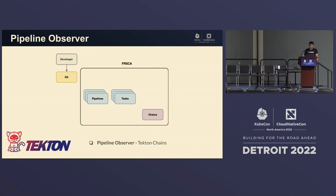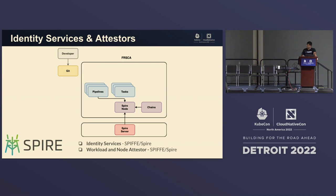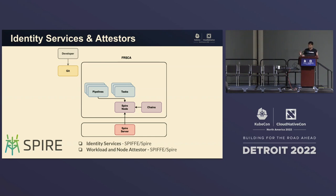The pipeline observer, as Mike mentioned, is Tekton Chains — it observes the actual pipeline to see exactly what's happening within the tasks. It gives us a SALSA attestation and generates signed attestations so we can validate that this is exactly the artifact created through our pipeline. Third is Spire, which provides short-lived certificates and does workload and node attestations. It validates that you are running on a trusted node and validates the workloads. Spire connects directly with pipelines and chains, using those short-lived certificates to do signing of results and the task object itself to make it non-falsifiable.